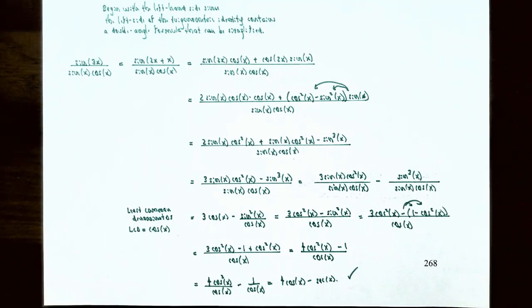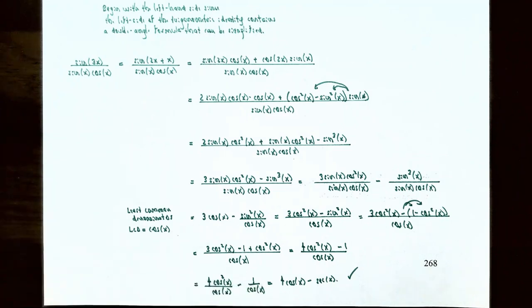Starting with the left-hand side and applying algebra steps and trigonometric identities, we obtained the right-hand side, proving the identity that sine(3x) divided by sine x cosine x equals 4 cosine x minus secant x.